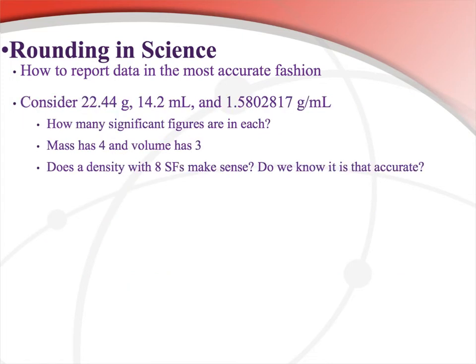Looking at those three numbers from the density calculation: 22.44 has four significant figures — no zeros, so all four digits count. The volume, 14.2, has three significant figures. Does it make sense to write a density with eight significant figures? We know that can't possibly be accurate. The question is: at what point — the 5, the 8, the 0, the 2 — do we actually round off? Here are the rules.